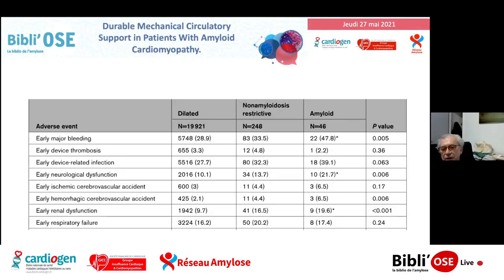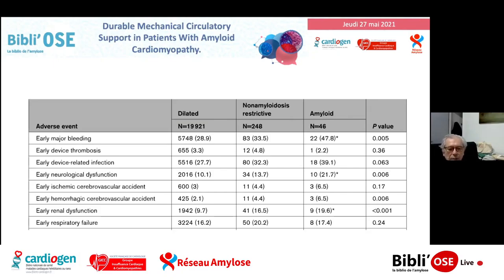Autre point analysé : les complications lors de l'implantation du système. On voit beaucoup plus d'hémorragies, une dysfonction neurologique précoce — probablement liée au poids amyloïde en périphérie — plus d'insuffisance rénale et plus d'hémorragie majeure précoce.